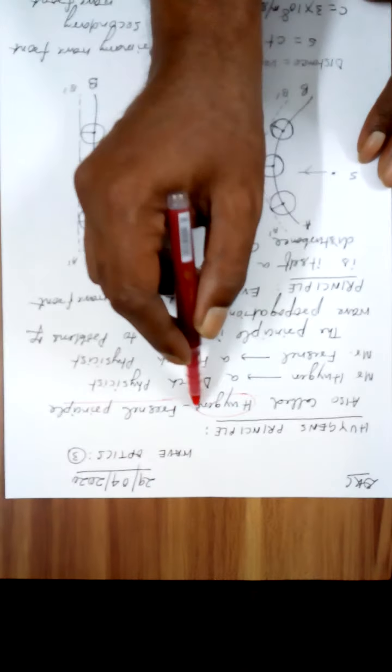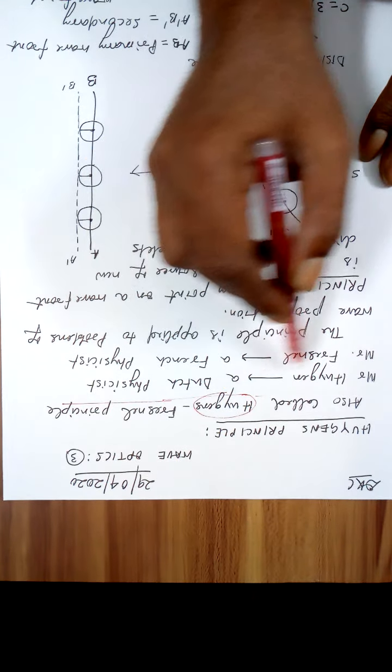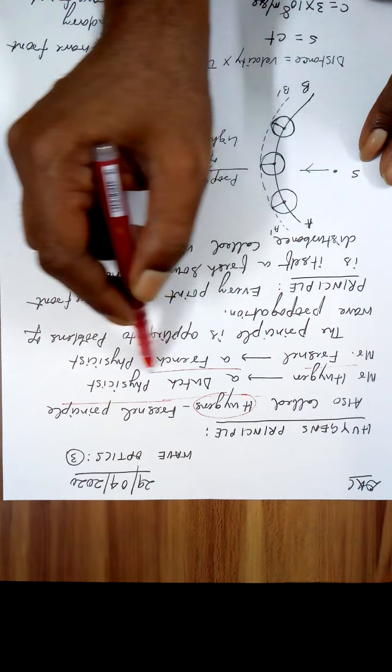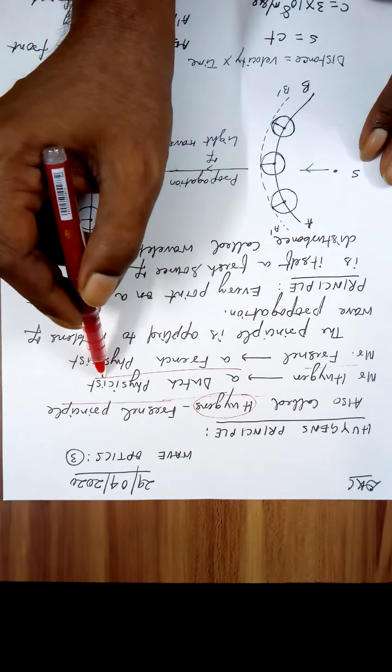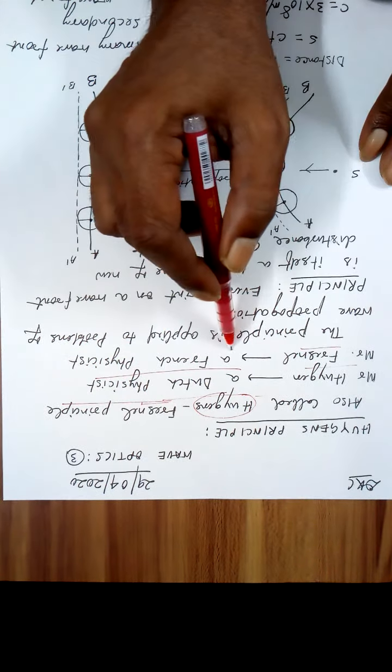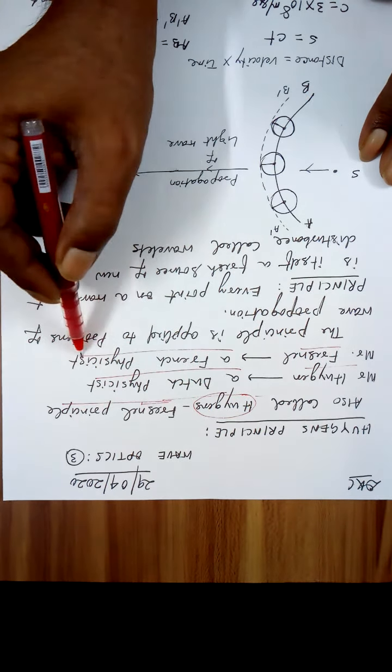Huygens is the name of a physicist — Mr. Huygens, a Dutch physicist — and Fresnel, Mr. Fresnel, a French physicist.